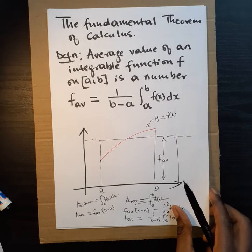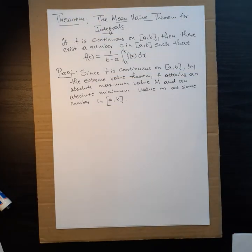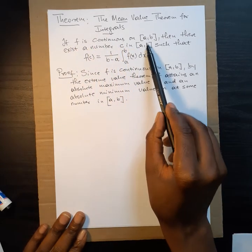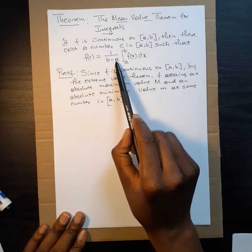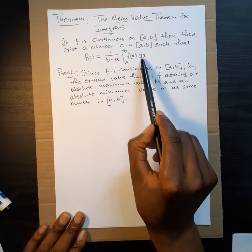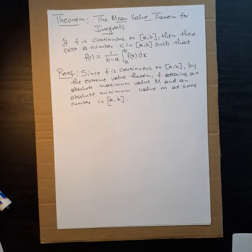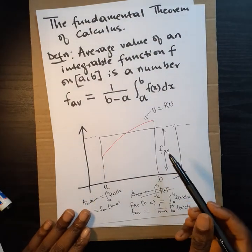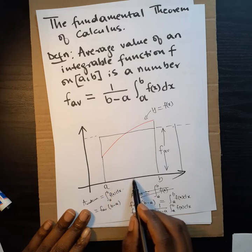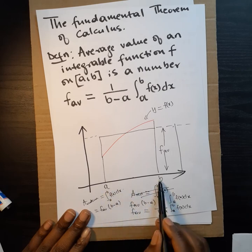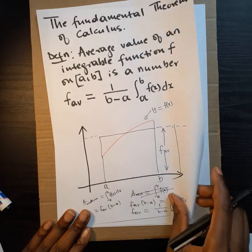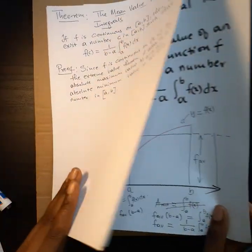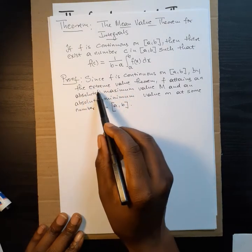The mean value theorem for integrals states: if f is continuous on a closed interval [a, b], then there exists a number c in [a, b] such that f(c) = 1 over (b minus a) times the integral of f(x) dx from a to b. We are saying there exists a number c such that f(c) multiplied by the length of [a, b] gives the area under the curve.